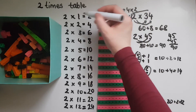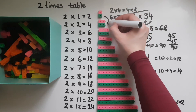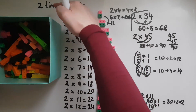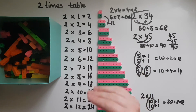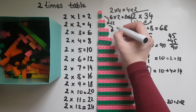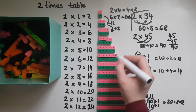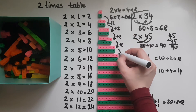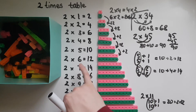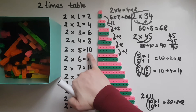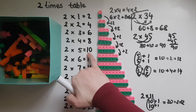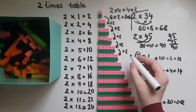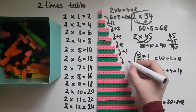Another thing to look at is the visual pattern. Two times one is two. To get to the next one — two times two — we add two, because we're looking at the two times table. We keep adding two each time. So if you know two times five is ten, to get two times six just add two on top: ten and two gives us twelve, which is two times six or six times two.